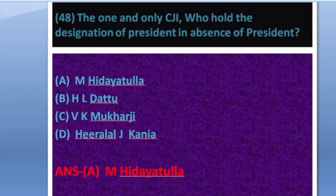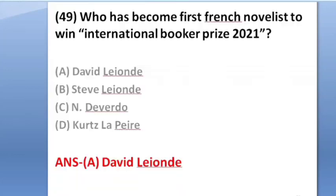Question number 49: Who became the first French novelist to win the International Booker Prize in 2021? Options: A — David Diop, B — Stephen Leandro, C — N. Dave Rao, D — Courtois-Lei-Pierce. The answer is option A — David Diop. This is a most important question.